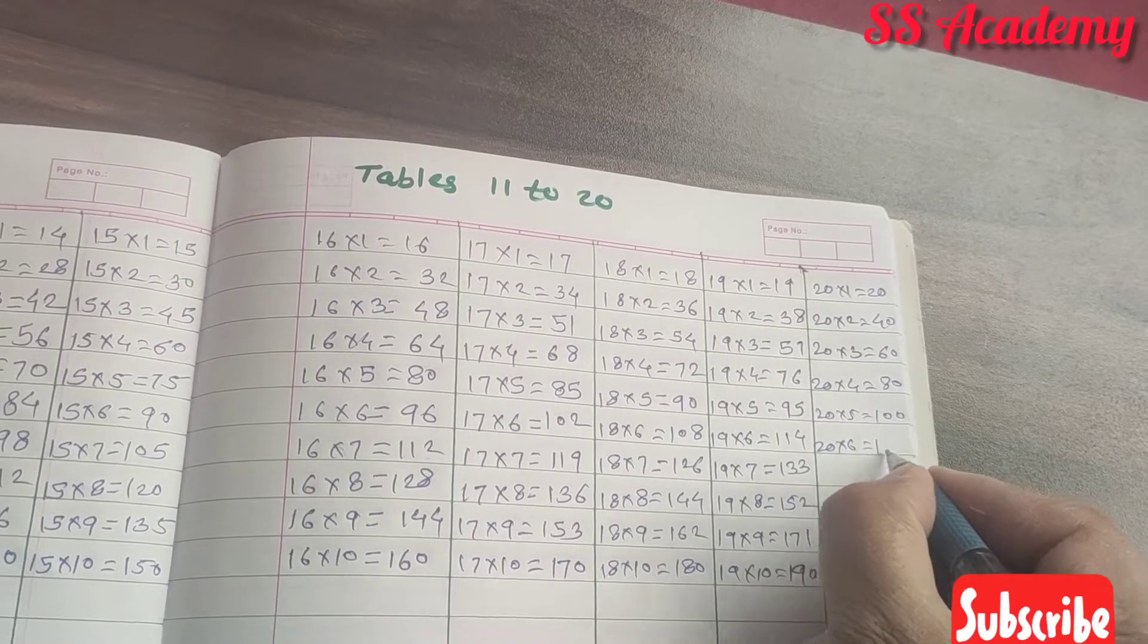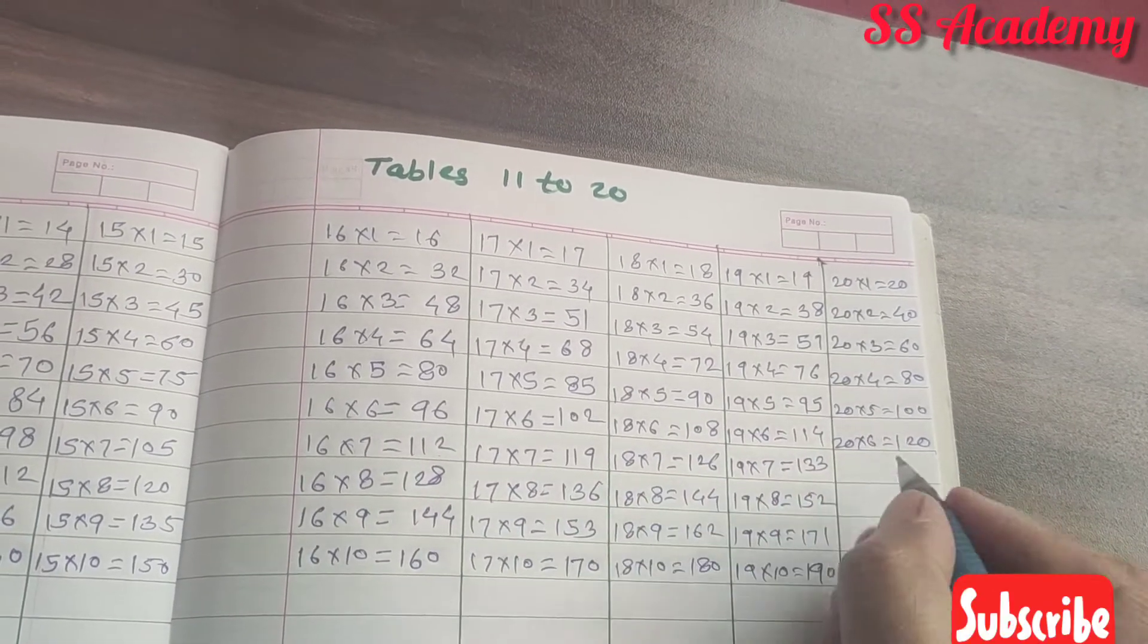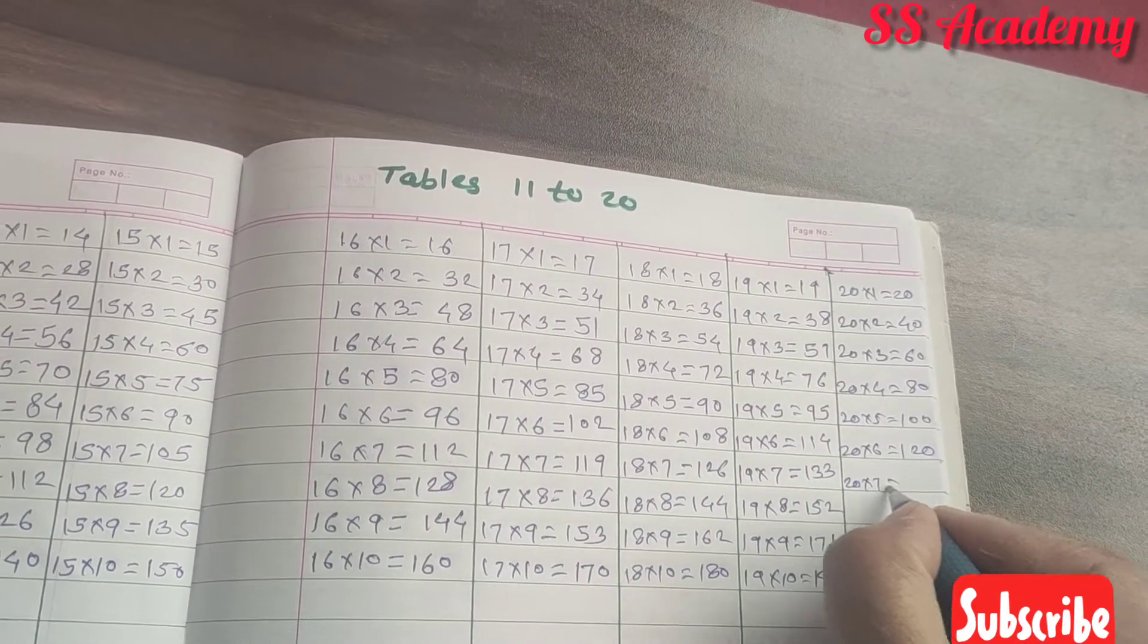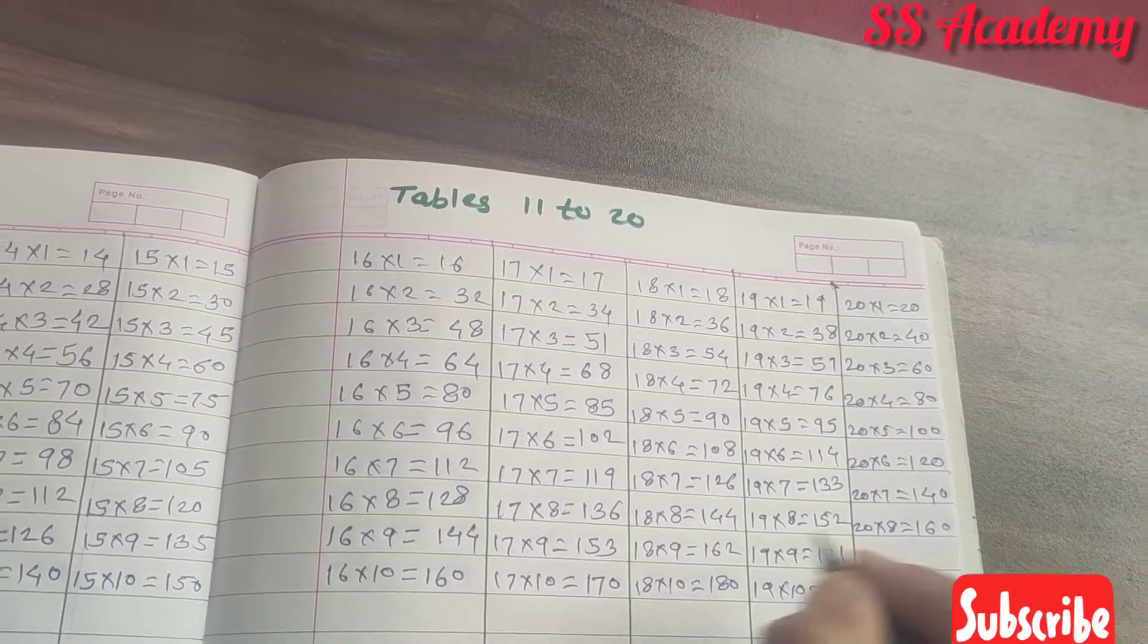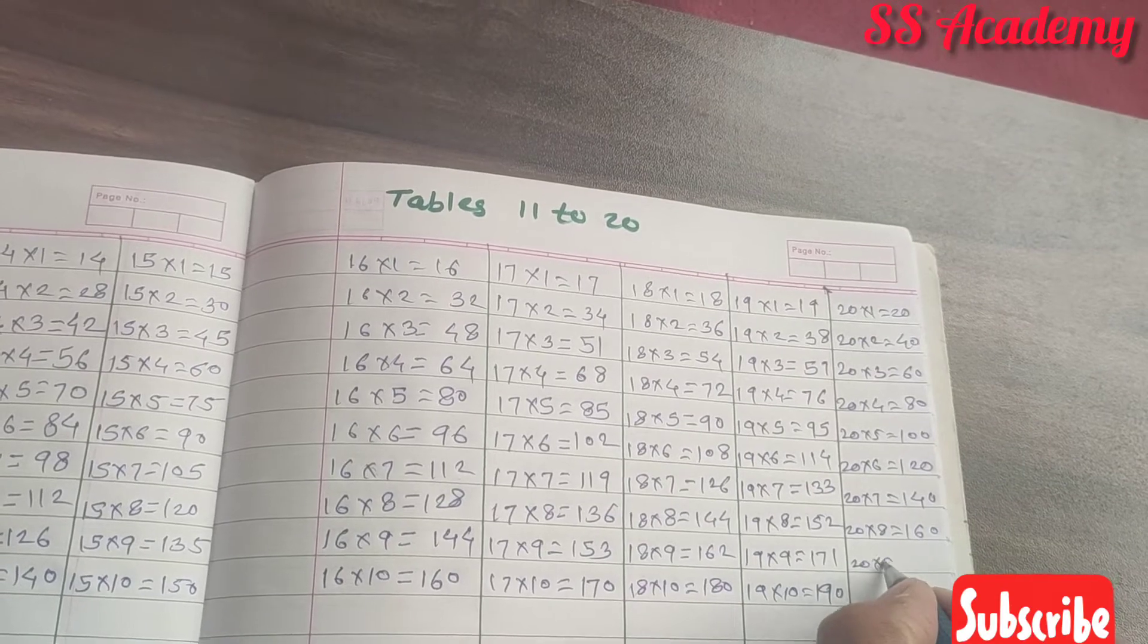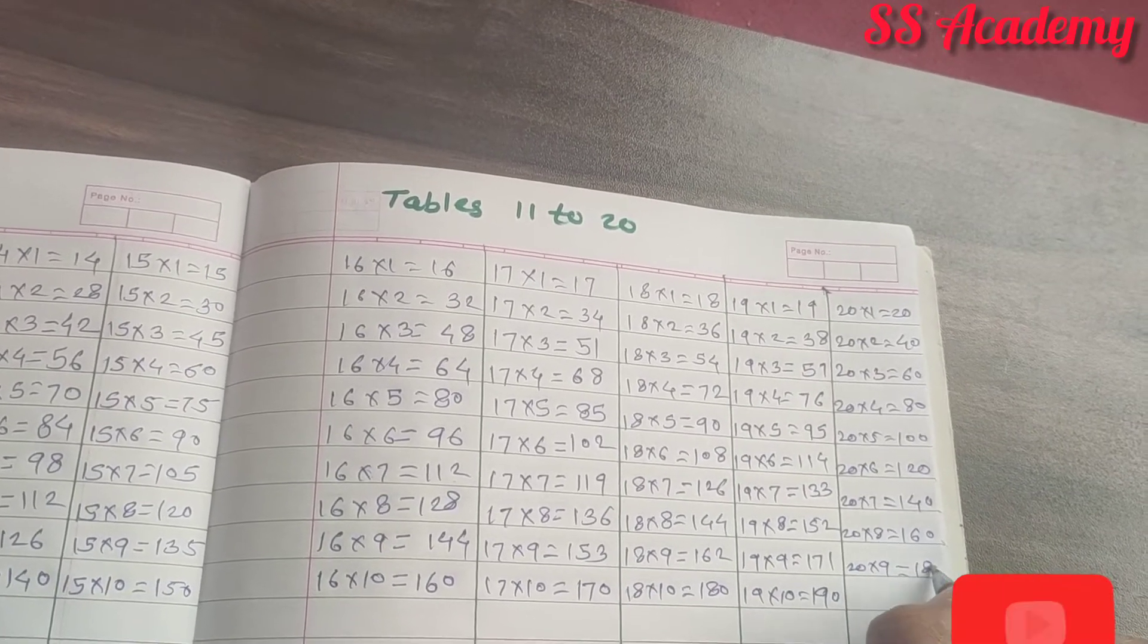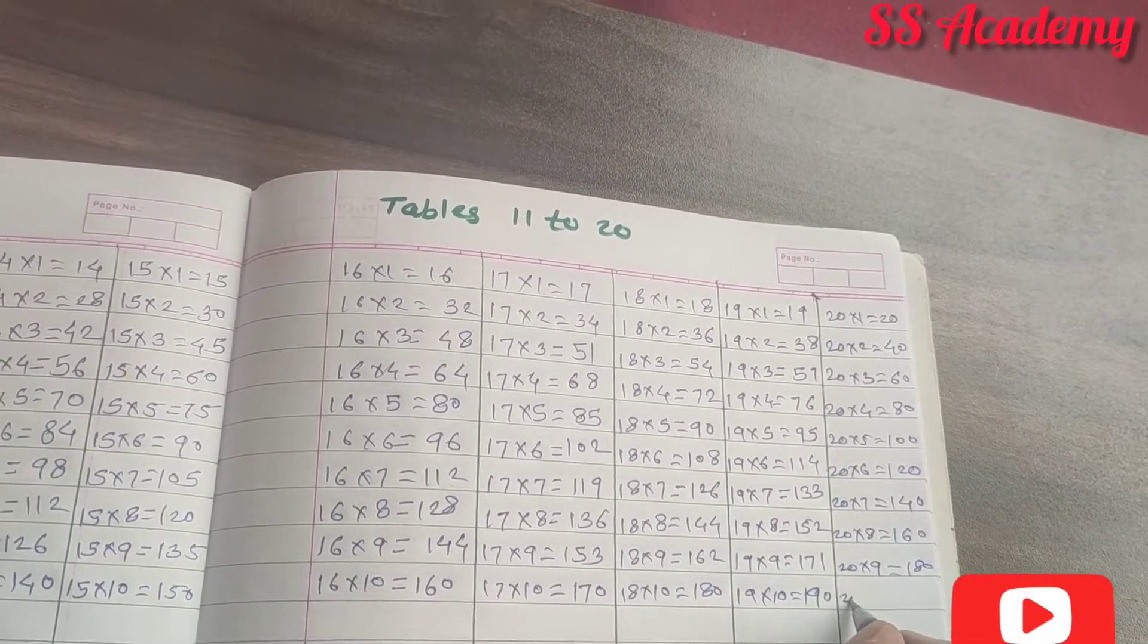20 times 6 is 120. 20 times 7 is 140. 20 times 8 is 160. 20 times 9 is 180. 20 times 10 is 200.